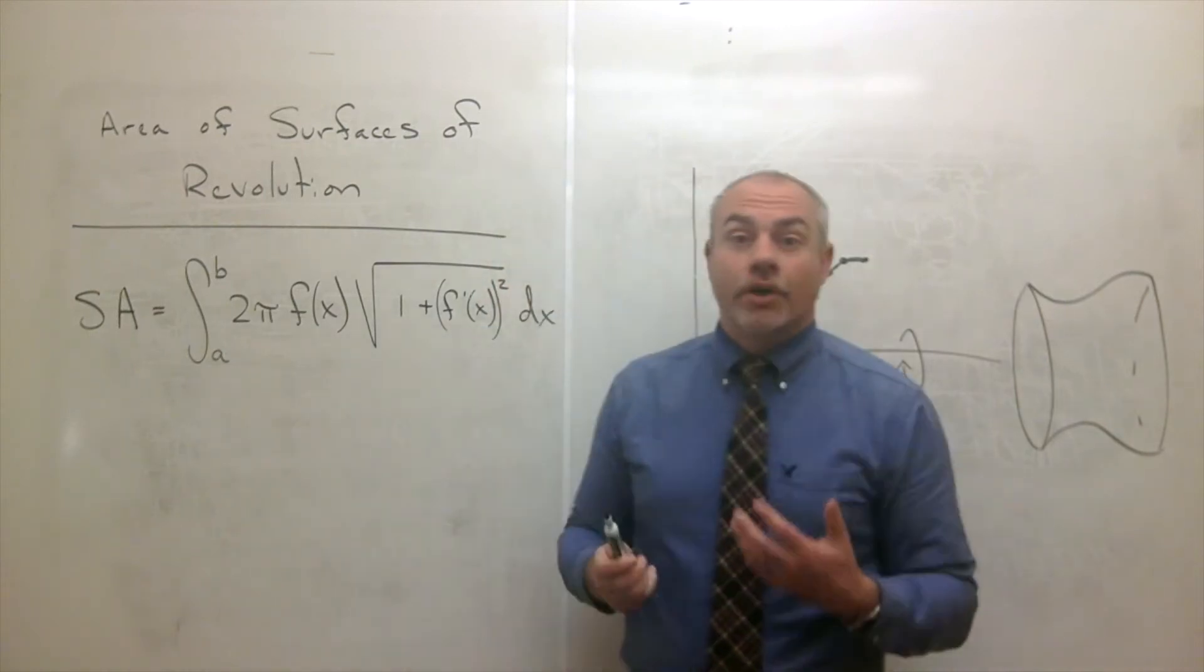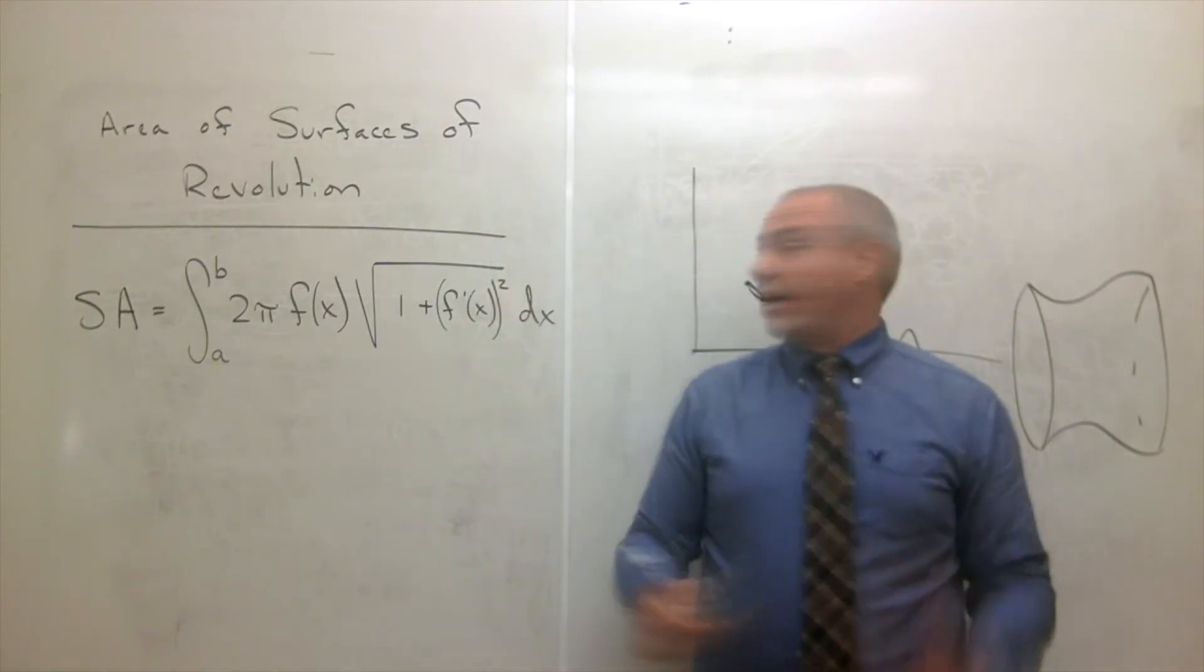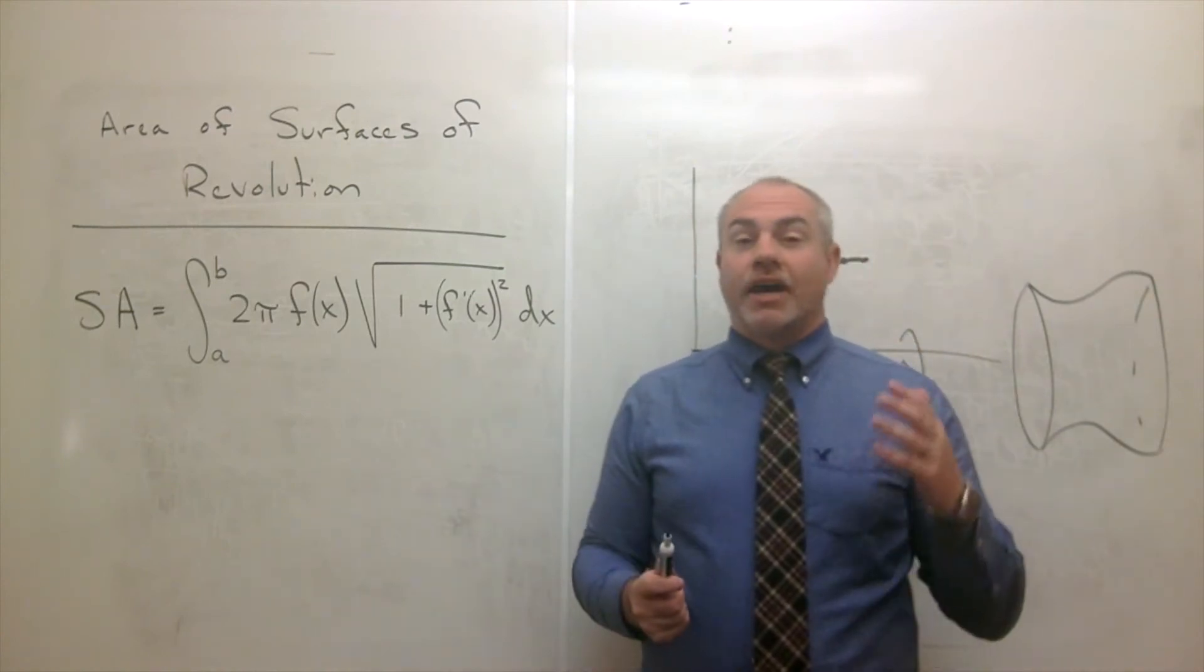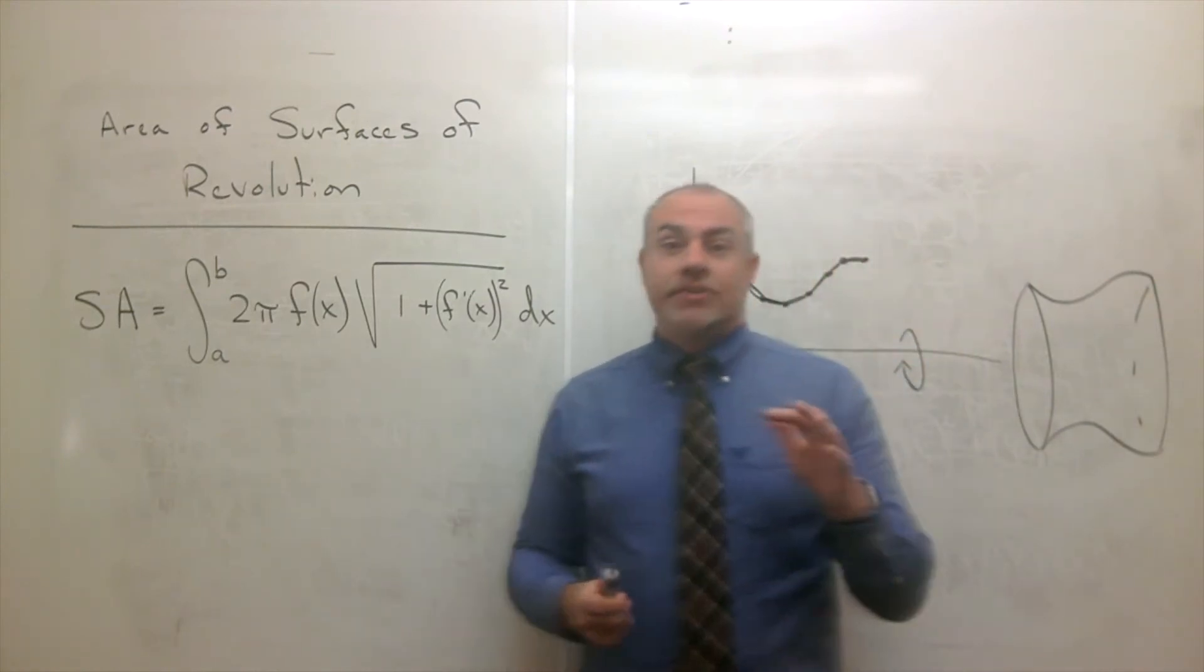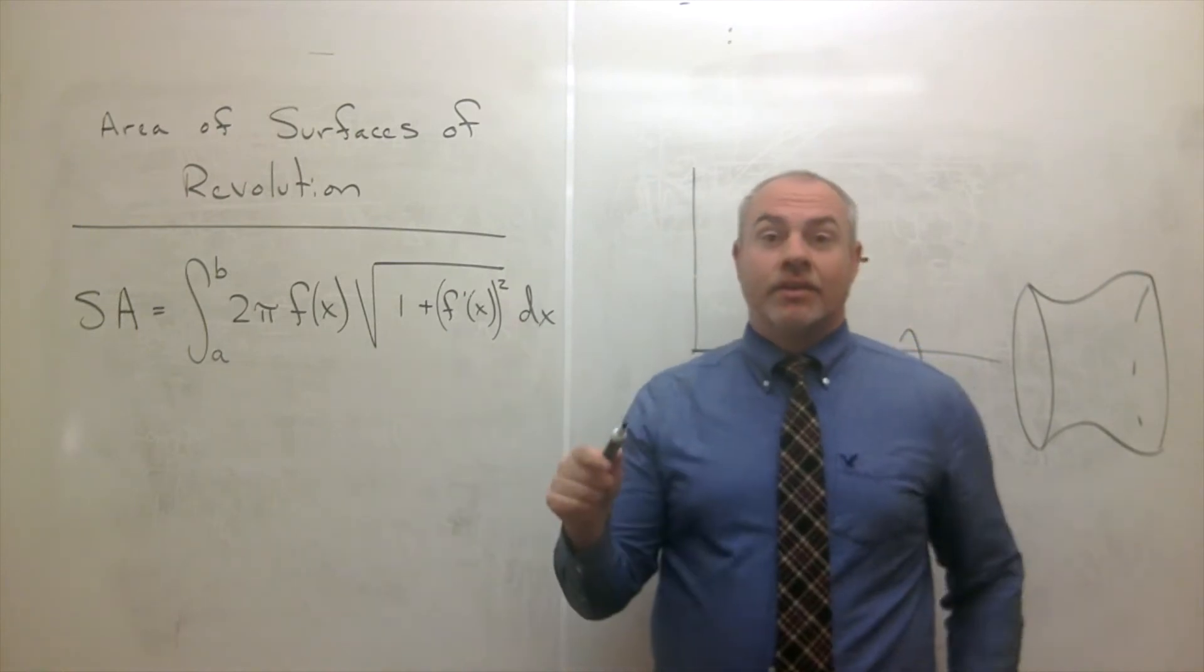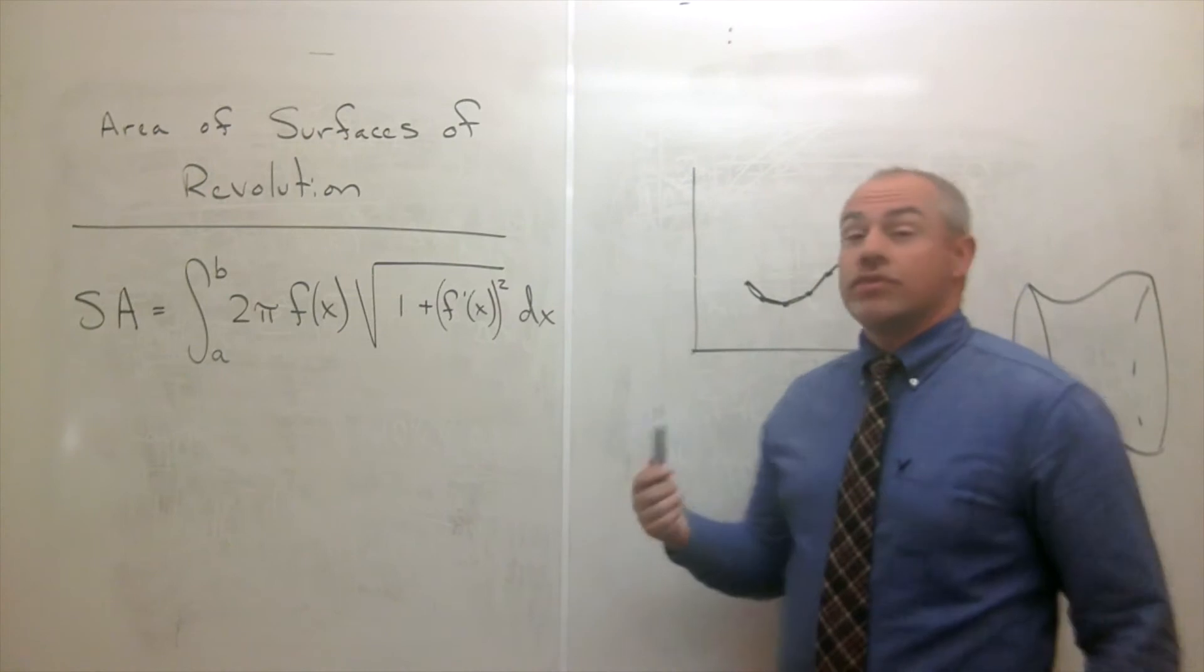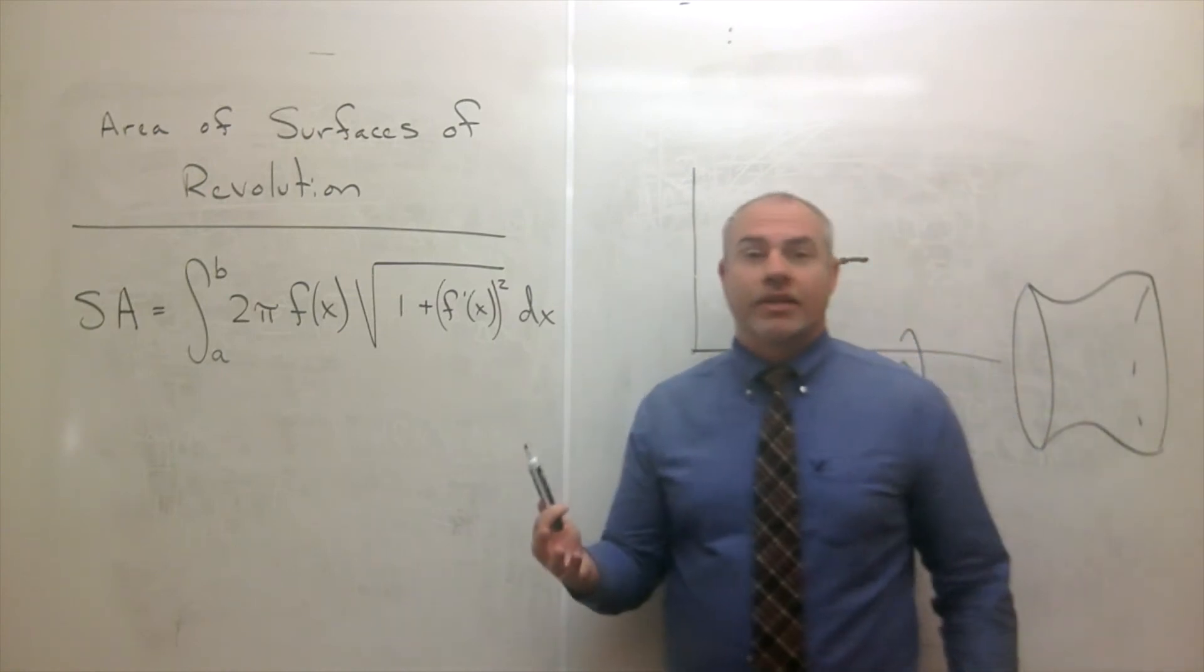Now, I'm not going to go through the entire proof of this formula for surface area. It's in any calculus book, and it's very similar to the arc length formula's derivation. You do many similar things, you need the mean value theorem, just like you did for arc length.